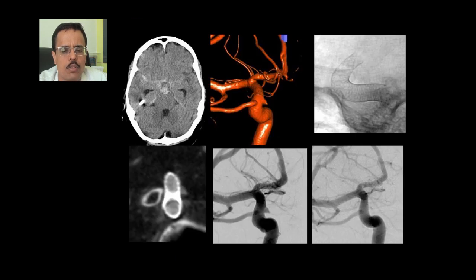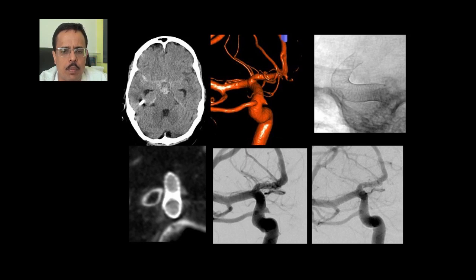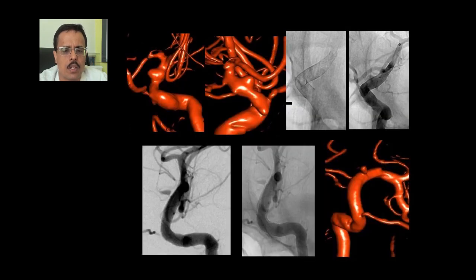With evolution, we are now using more and more the pipeline flow diverter device. This patient with subarachnoid hemorrhage had a very small blister aneurysm in the ICA. We placed a flow diverter pipeline device and immediately it was still filling, but on follow-up the aneurysm was completely gone. In a more complicated case of ICA blister fusiform aneurysm with a small paraclinoidal aneurysm, we placed the flow diverter and on follow-up the aneurysm was completely gone, with the intima covering the stent very well.